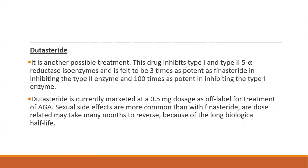Dutasteride is another possible treatment that inhibits both type 1 and type 2 5-alpha reductase isoenzymes and is three times more potent than finasteride in inhibiting type 2 and 100 times more potent in inhibiting type 1 enzyme. It is marketed at a 0.5 mg dose as an off-label treatment for androgenetic alopecia. However, sexual side effects are more common than with finasteride, are dose-related, and take many months to reverse due to the long biological half-life. Although results are better, it is not the recommended 5-alpha reductase inhibitor due to its side effect profile.